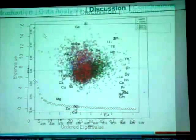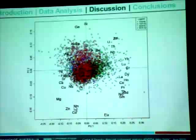This is a biplot with PC1 on the x-axis and PC2 on the y-axis. You have all the samples shown by these symbols — TOS and BOS, both fine and coarse — and you can see the clustering of these elements. The further away they are from the origin, the more important they are in representing the principal component and explaining the processes taking place. In PC1, the positive loadings are highly represented by rare earth elements, zirconium, and rare earth element lookalike elements.